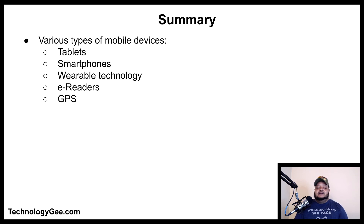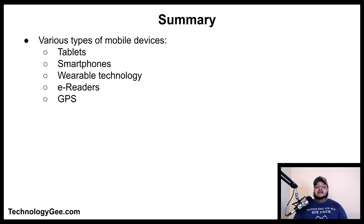In summary, we have talked about various types of mobile devices such as tablets, smartphones, wearable technology, e-readers, and GPS. For more information, please visit my website TechnologyG.com to get read up on the latest and greatest to help you successfully pass the CompTIA A+ 220-1001 exam. If you got something beneficial from this, please like, share, and subscribe to this channel and drop a comment below. Until next video, ladies and gentlemen — peace.